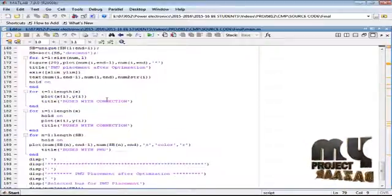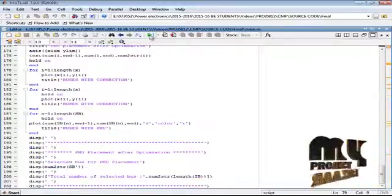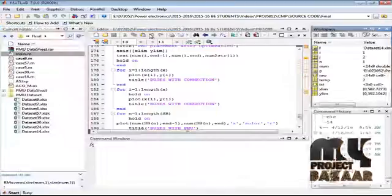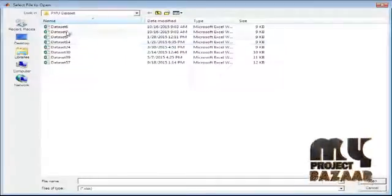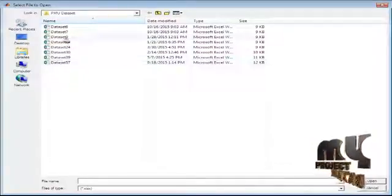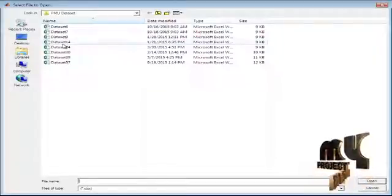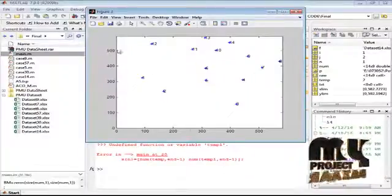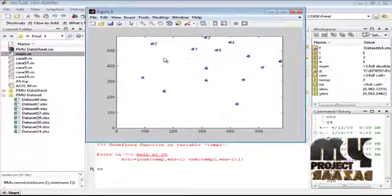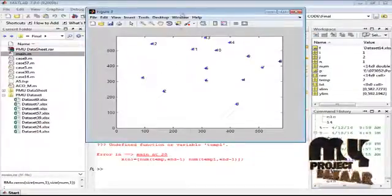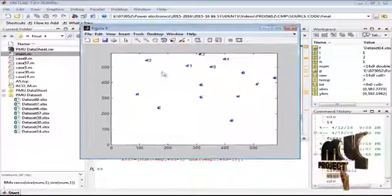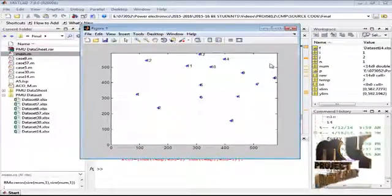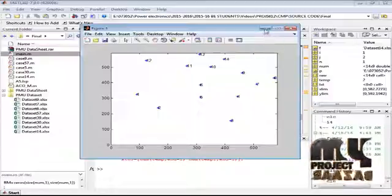Now we are going to see the running procedure. This is to run the main source code. This is the PMU data set. What bus system we want to see, we just take it from here. I can select bus system 14. So 14 bus system PMU selection, it will show on the systems. This is bus system 14.